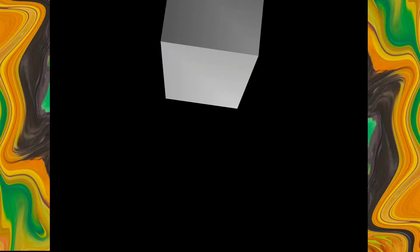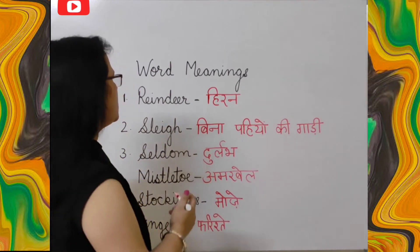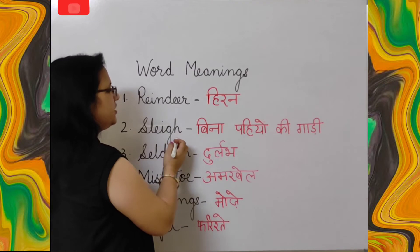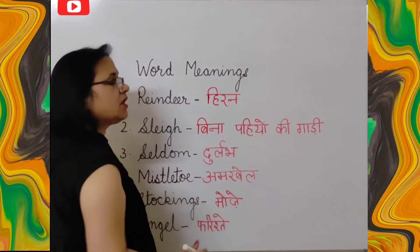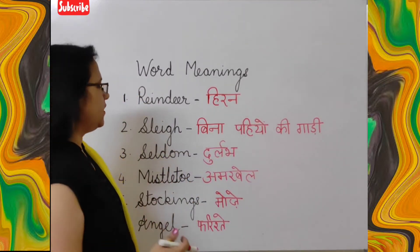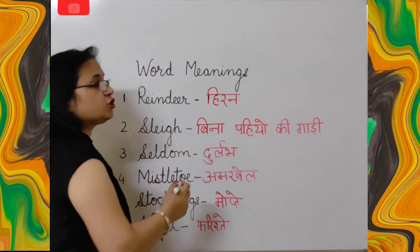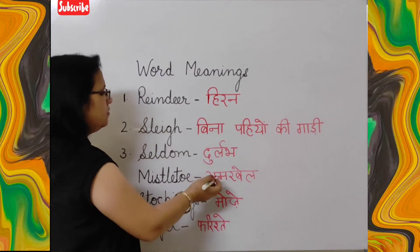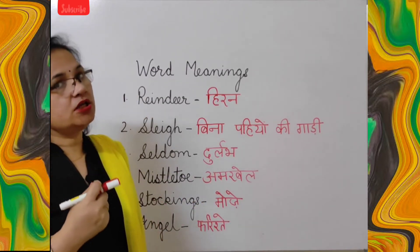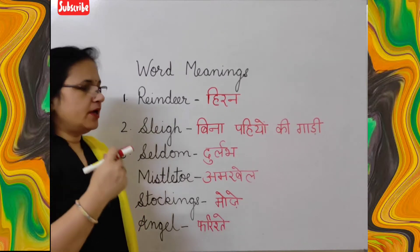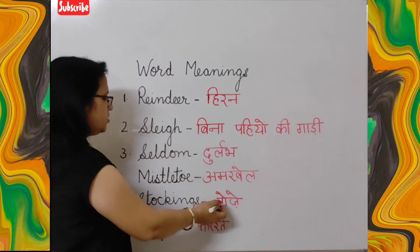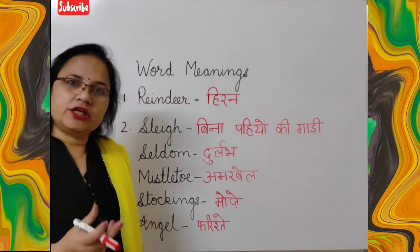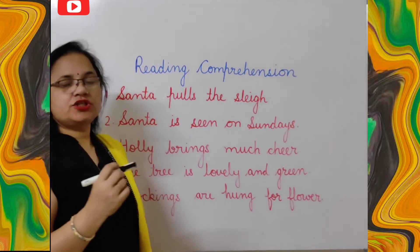Now let's write word meanings. Reindeer means hiran. Sledge — sledge kehte hain bina pahiyon ki gaadi jis par Santa Claus aata hai. Seldom means durlabh — jise paana bahut hi kathin ho. Mistletoe means amar bel — jo kabhi nahi sookhti, hamesha hari bhari rehti hai. Stockings means moze. Angel kehte hain farishton ko.